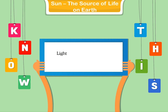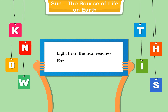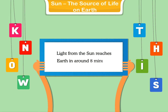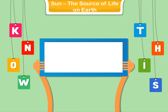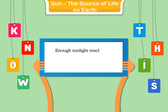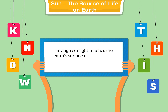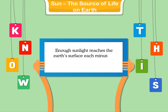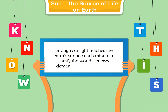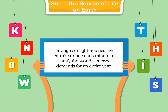Know this: Light from the sun reaches earth in around 8 minutes. Enough sunlight reaches the earth's surface each minute to satisfy the world's energy demands for an entire year.